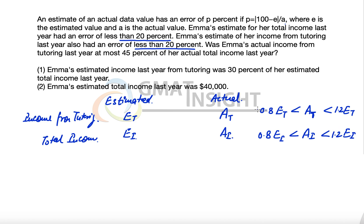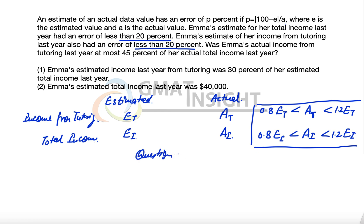That is the information given in the question. Now, the question asks: was Emma's actual income from tutoring, AT, at most 45% of her total actual income? That means: is AT less than or equal to 0.45 times AI?